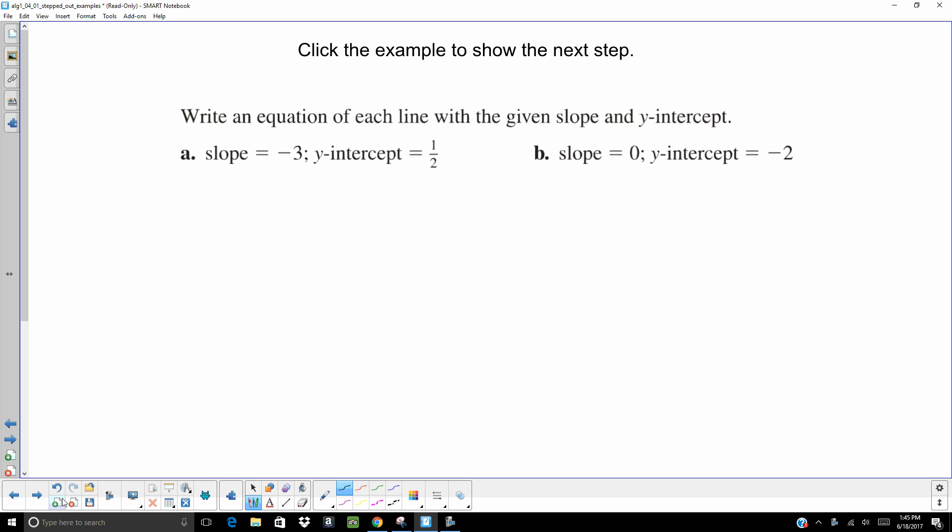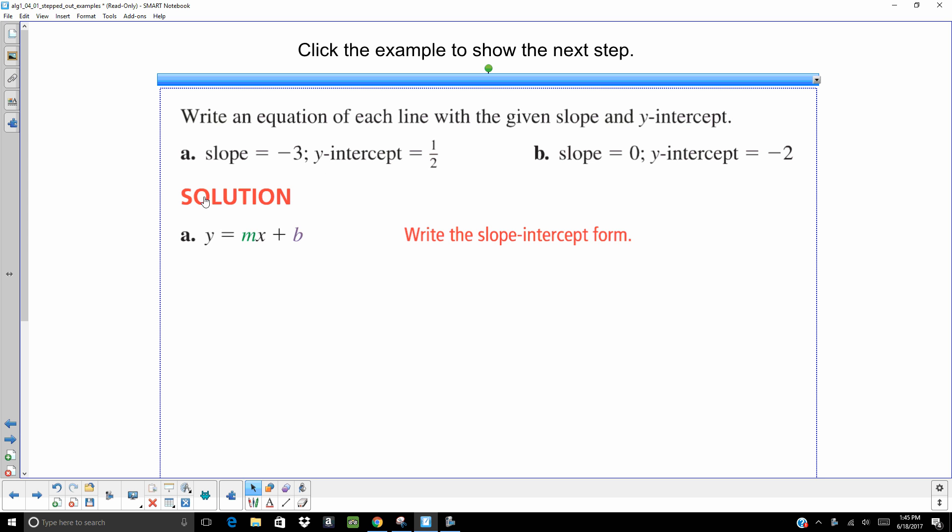This is typically going to be the easiest type of problem that you're going to be given, because you're given the slope, m, and you're given that y-intercept, b. So, we want to use the slope-intercept form of the line, y equals mx plus b. It's just a matter of plugging in what you know. You know m is negative 3, b is 1 half. That's our equation right there, y equals negative 3x plus 1 half.